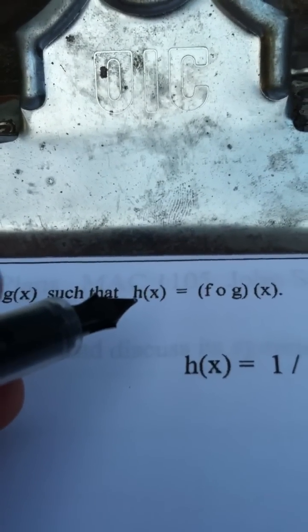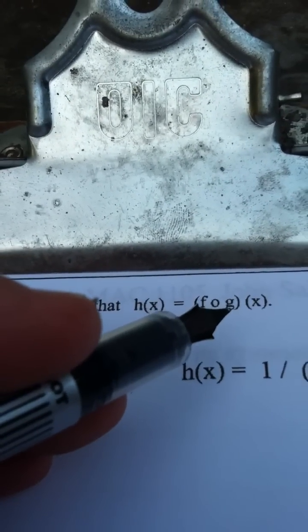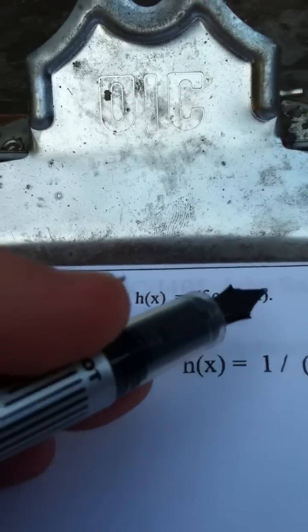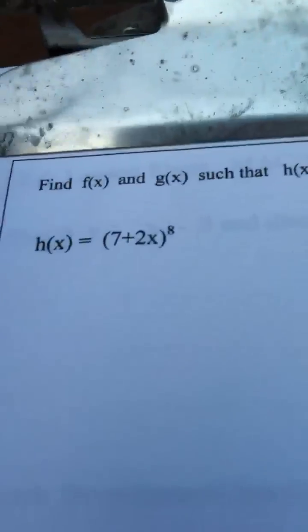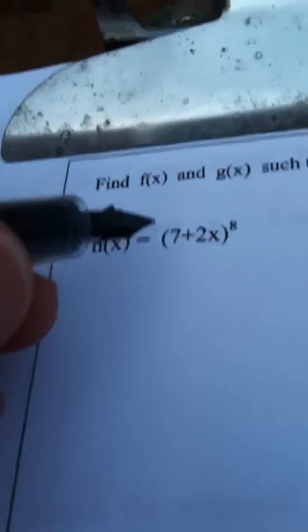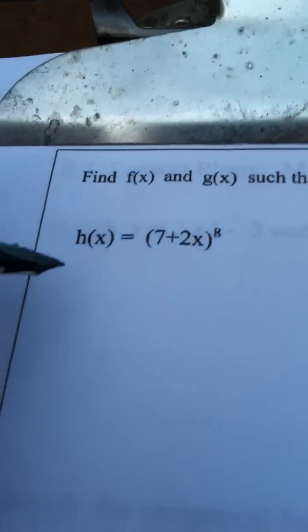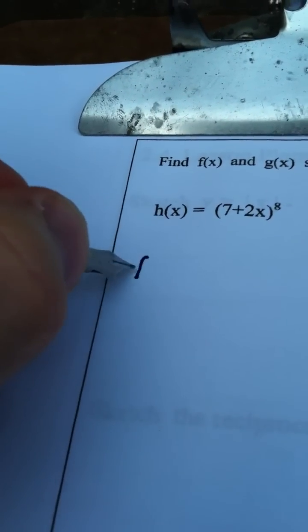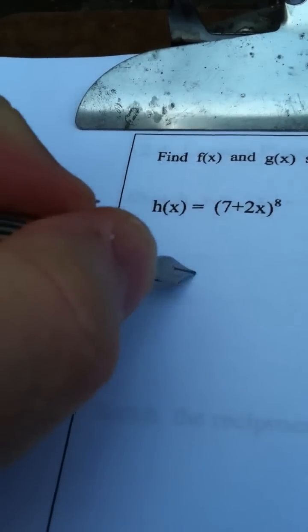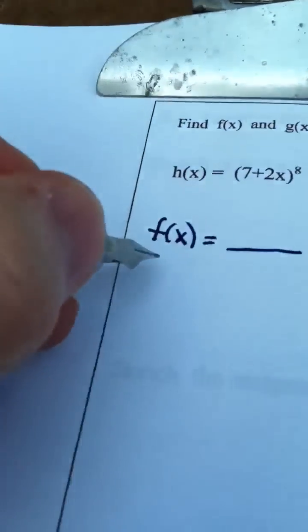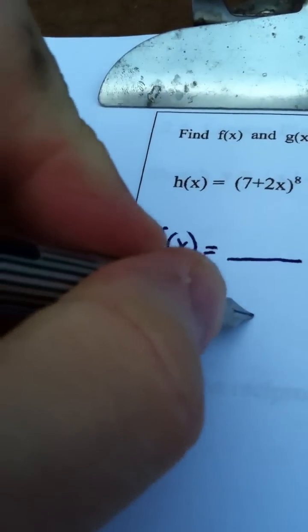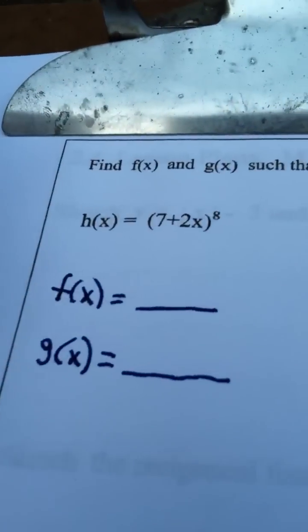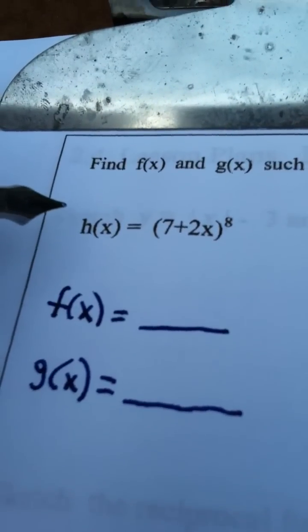In other words, the way we got h was we took function g, we started with g and we put it into f and we composed them to come up with h. So what we're looking for here is we're looking for two functions. We're looking for f(x) and we're looking for g(x) so that when we compose them we would get h(x).